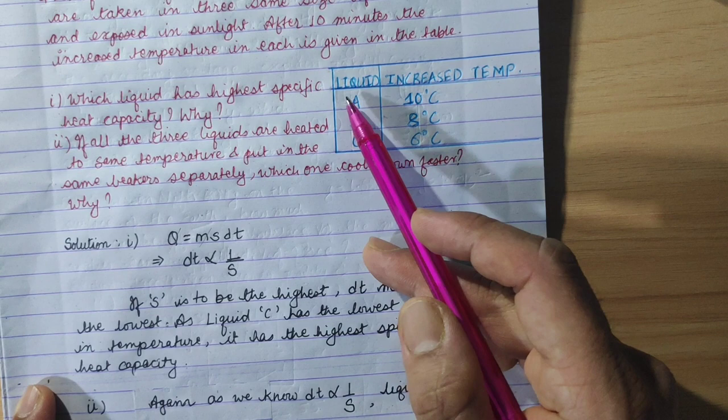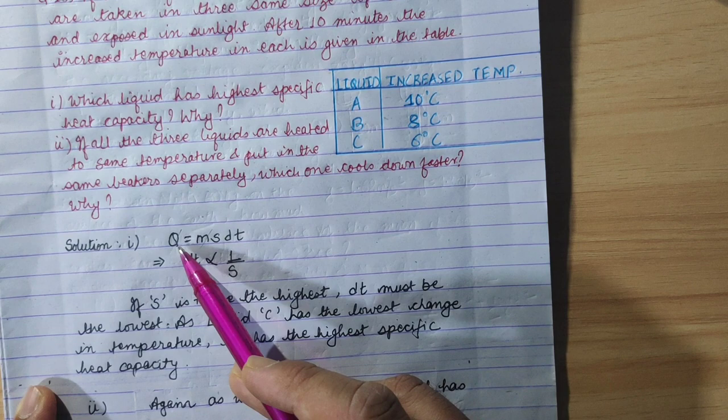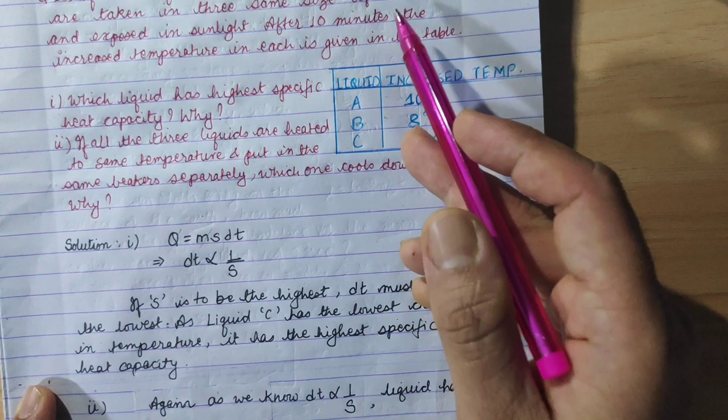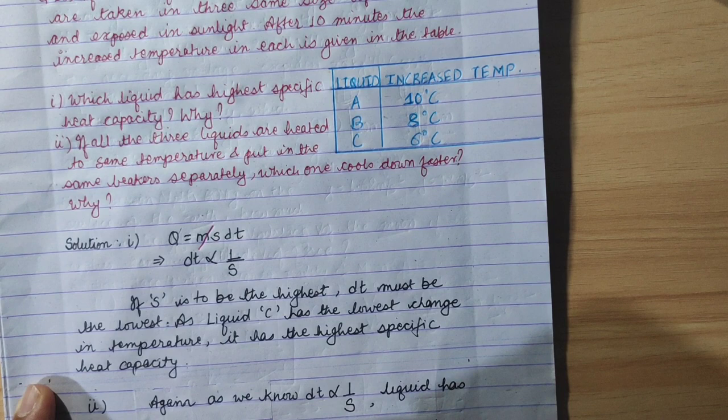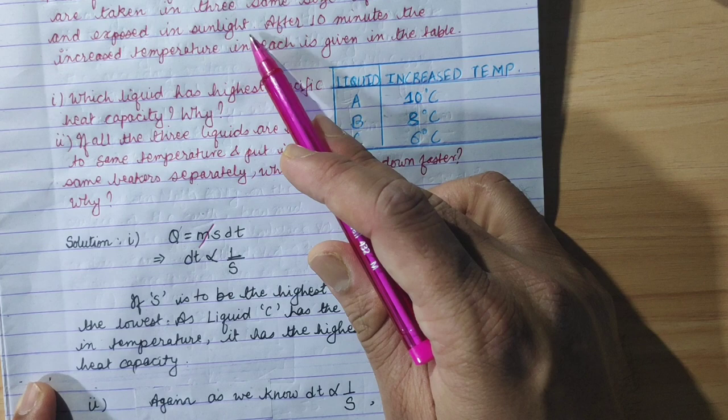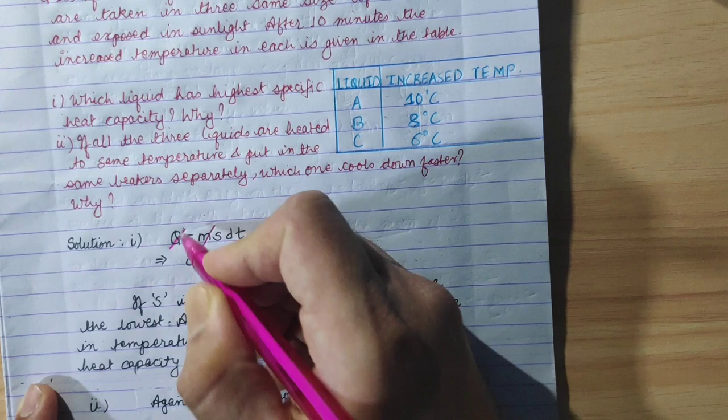For the solution, we first write the mathematical relation. The equation is Q = ms∆T. In this question, all samples have equal mass. They are placed in same size beakers and exposed to sunlight, so the amount of heat Q received is the same for all.